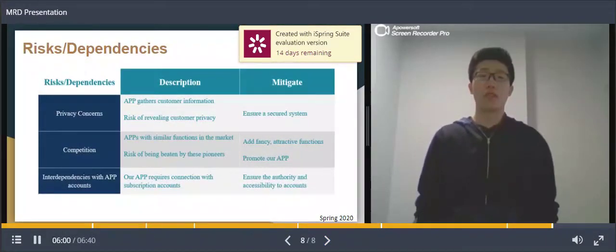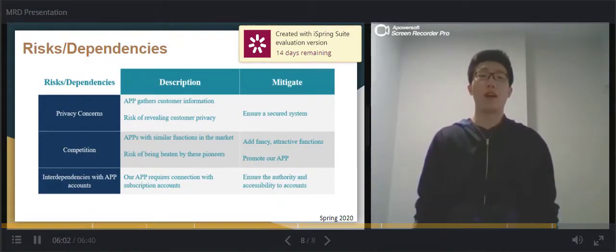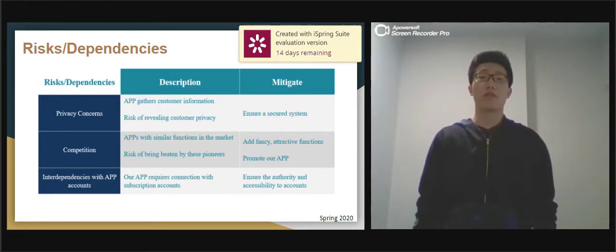We've summarized three risks and dependencies for our app. The first is privacy concerns. Our app gathers customer information and their payment method, so there is a risk of revealing customer privacy. We need to ensure a secure system to protect the information. Second is competition. Since there may be some apps with similar functions in the market, there is a risk of being beaten by these pioneers. We need to add fancy or attractive functions and promote our app.